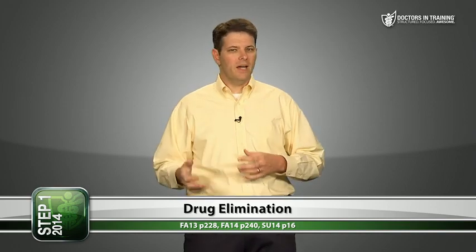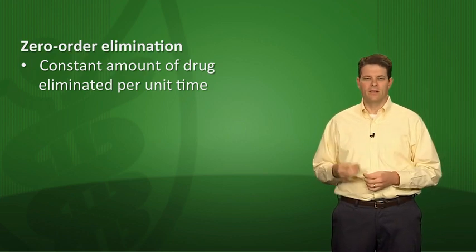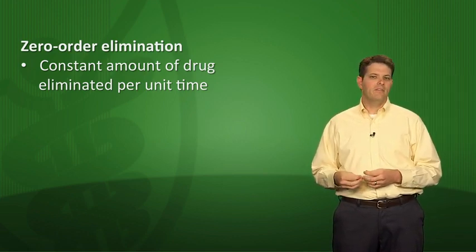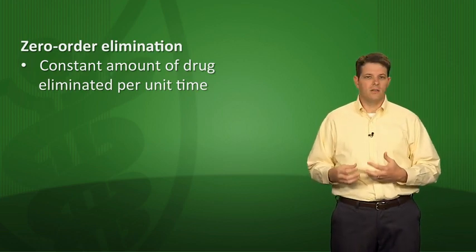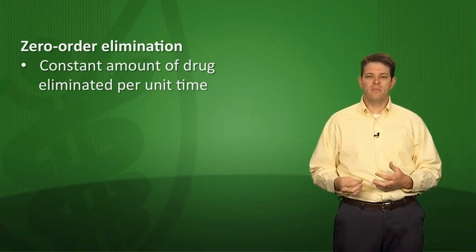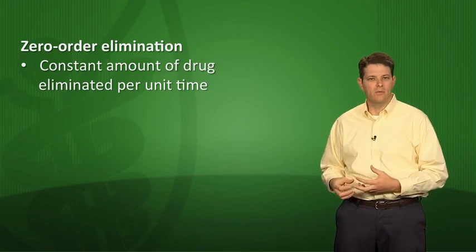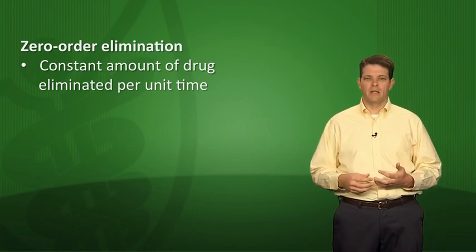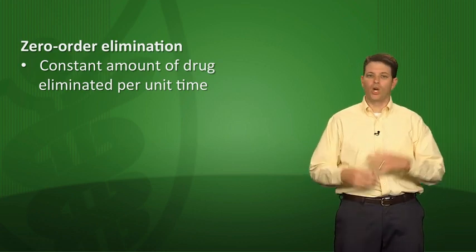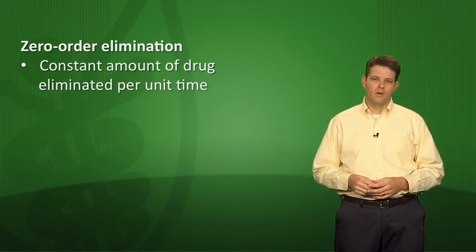There's zero-order elimination and first-order elimination. Zero-order elimination is where a constant amount of the drug is eliminated per unit of time — the enzymes behave as though they are saturated. It doesn't matter what the concentration of the substrate is; the enzymes can only work so fast. So if a drug is eliminated at 25 mg per hour regardless of drug concentration, that's zero-order elimination.